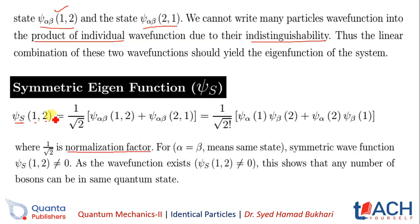We can write the symmetric wave function psi_s(1,2) as 1 over root 2. Jo alpha hai woh particle 1 ke saath hai aur jo beta hai woh particle 2 ke saath hai. Toh hum isko individual product ki sense mein likhein ge: psi of alpha(1) times psi of beta(2), plus psi of alpha(2) times psi of beta(1). Toh beta state mein particle 1 aa gaya.